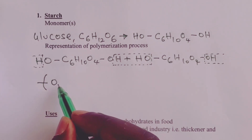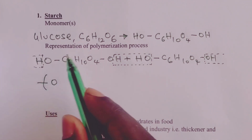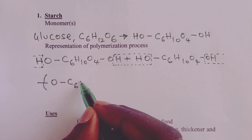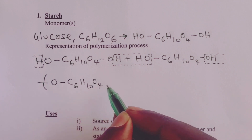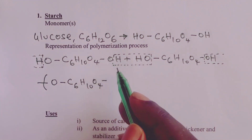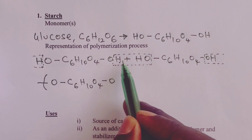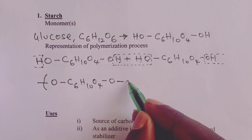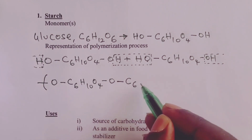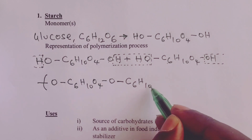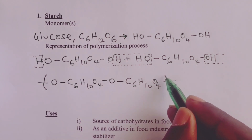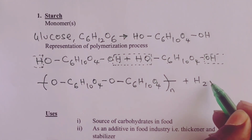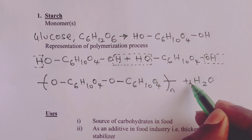We have HO remaining after H has reacted to form water. Then C6H10O4, and here we remain with only O, because we eliminate the H and the HO. After the O, we move straight to the second molecule where we have C6H10O4. That is the end of our polymer, plus N molecules of water. That is the structure of starch.